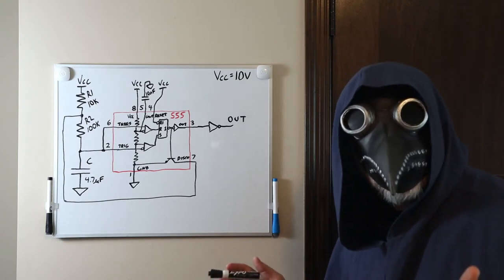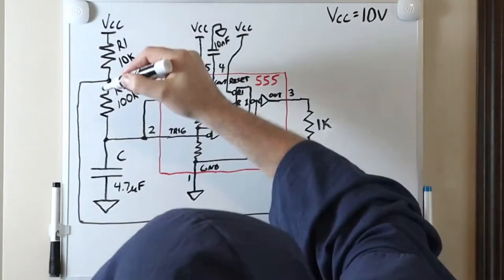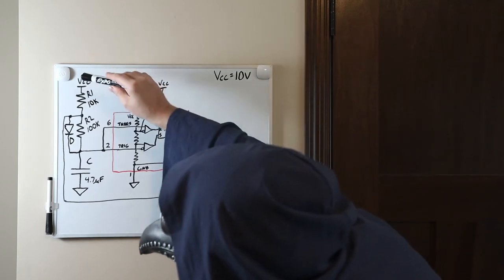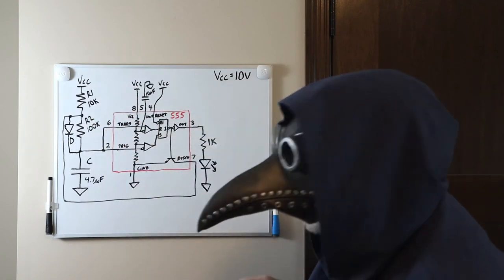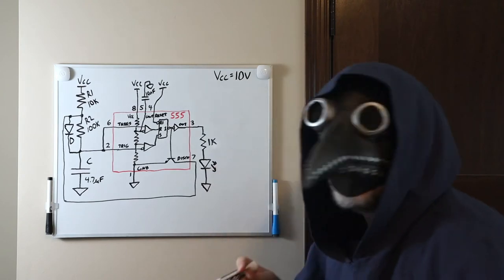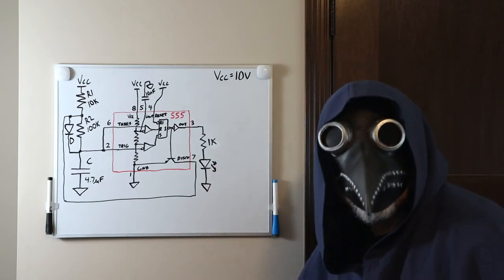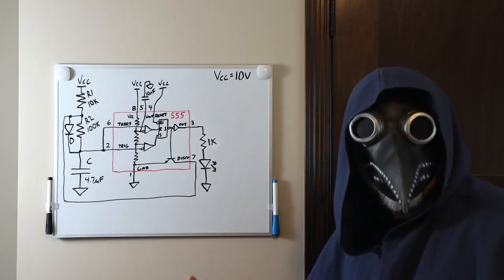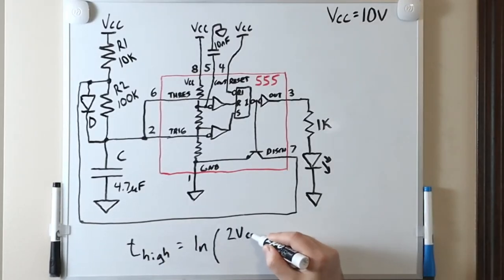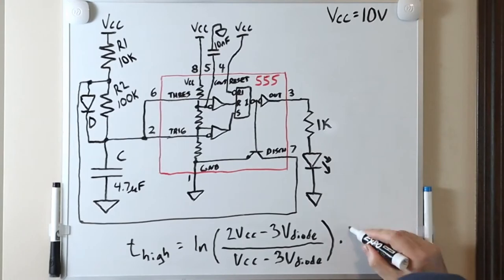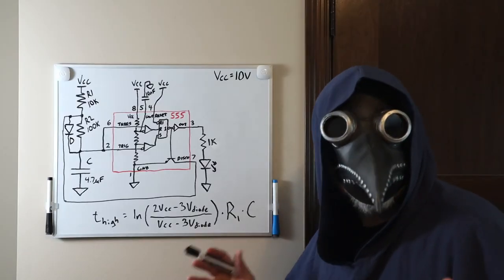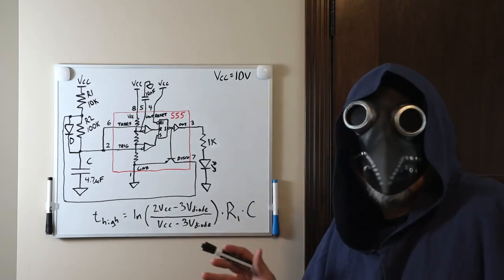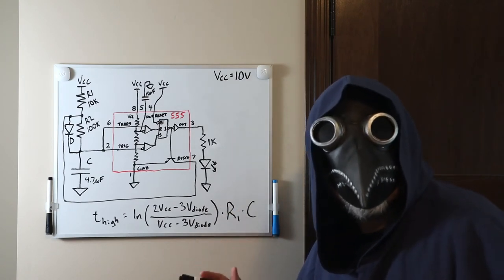Now, another common way to get a low duty cycle is to add a diode across R2 like this here. What this does is bypasses R2 when the capacitor charges. So, it only charges through R1. And when it discharges, it still only discharges through R2. So, now you can adjust R1 and R2 for a wide range of duty cycles. Since there is a diode in the circuit, there will be a voltage drop across it when the capacitor charges. So, it will change the high time slightly. This is the new formula for the high time. And I will show you where this comes from in my follow-up math video. Notice that VCC shows up in this formula. So, unfortunately, the frequency of this configuration will depend slightly on VCC.